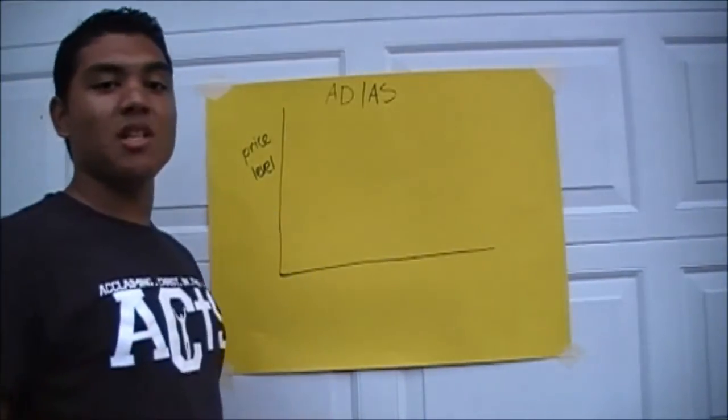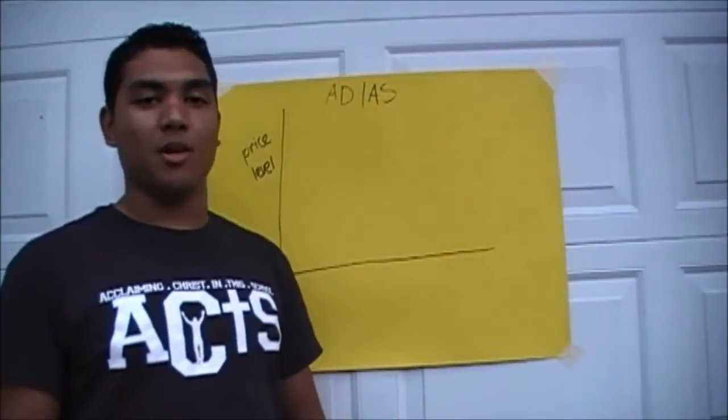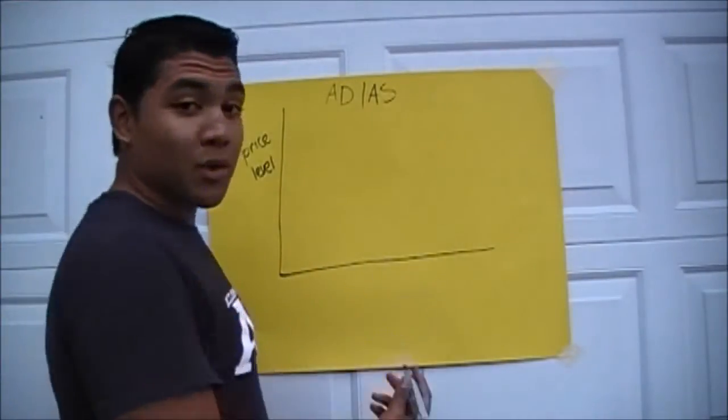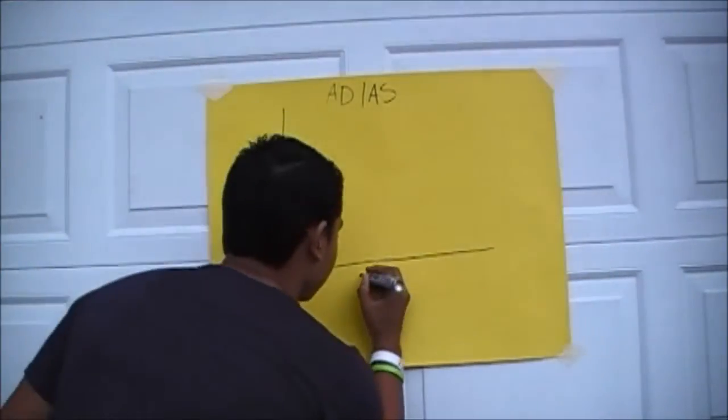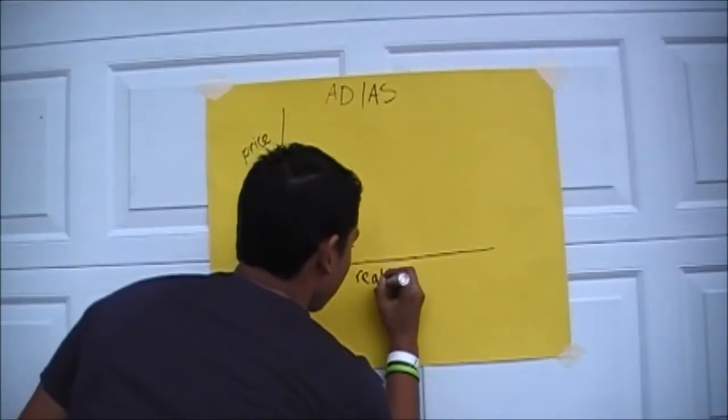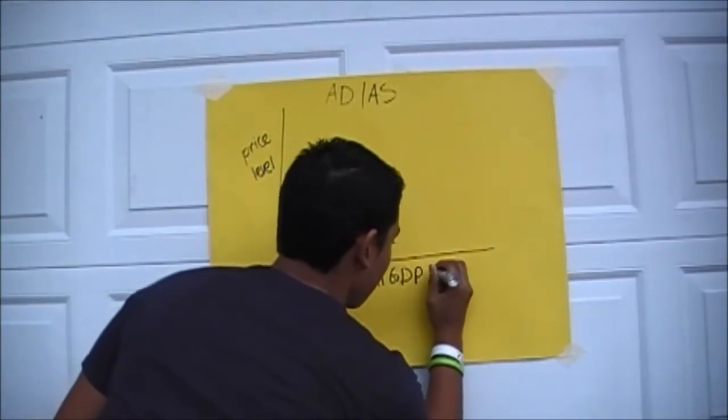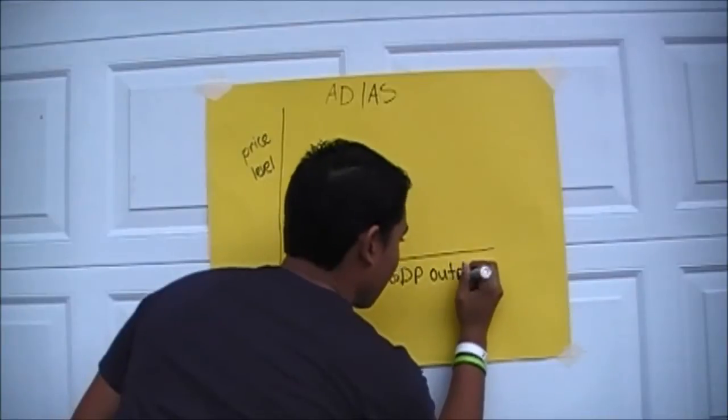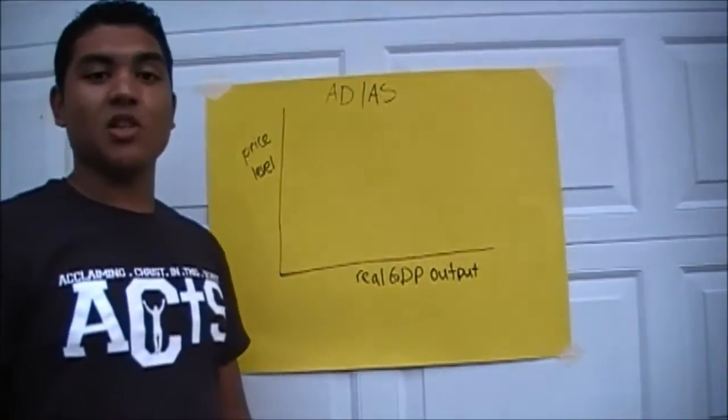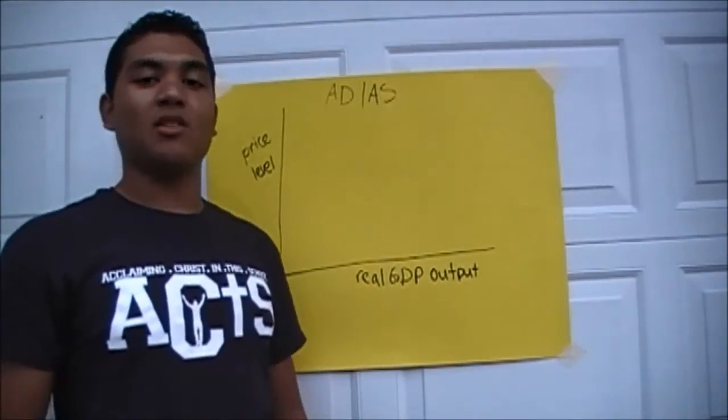Alright, so here we have price level, which means the overall current prices in the economy. Down here we have real GDP output. What that means is a total amount of output in the economy in a certain country.